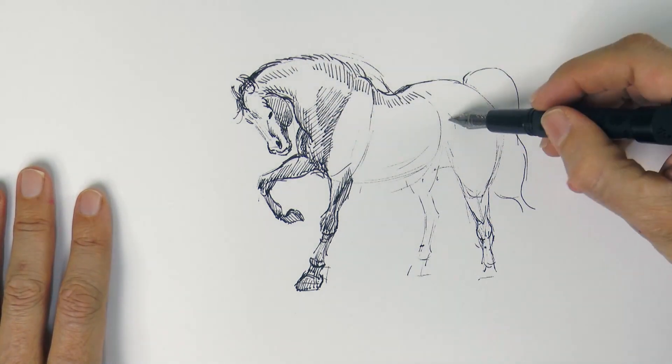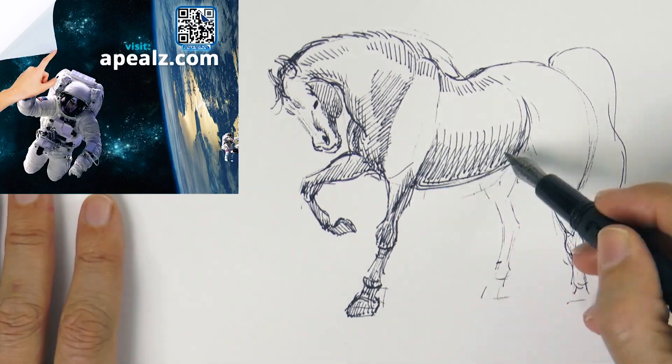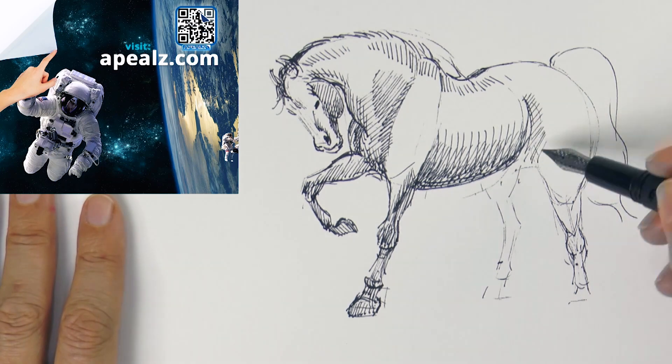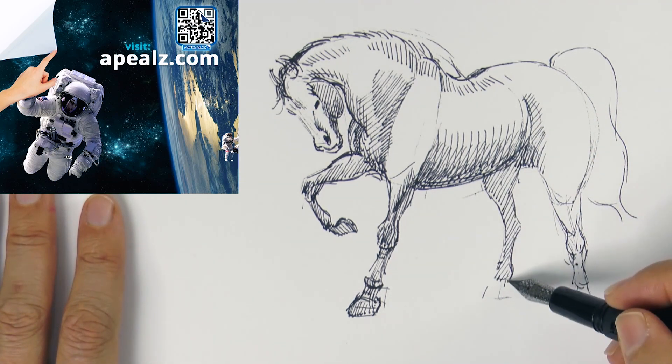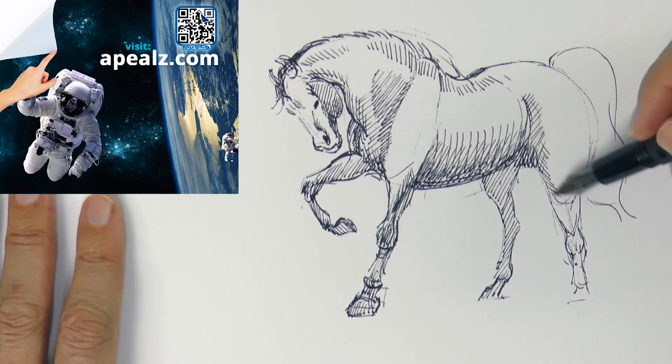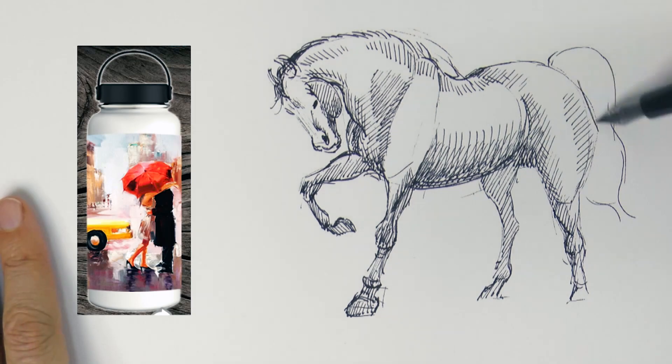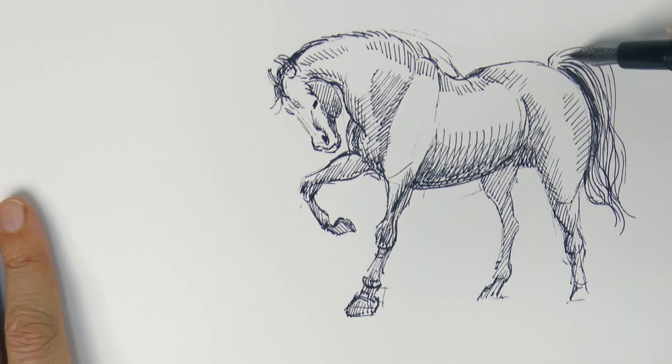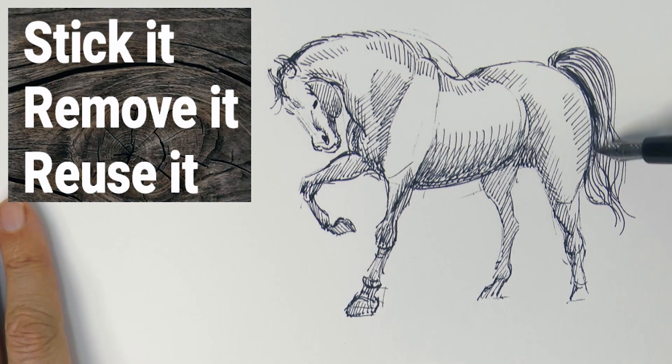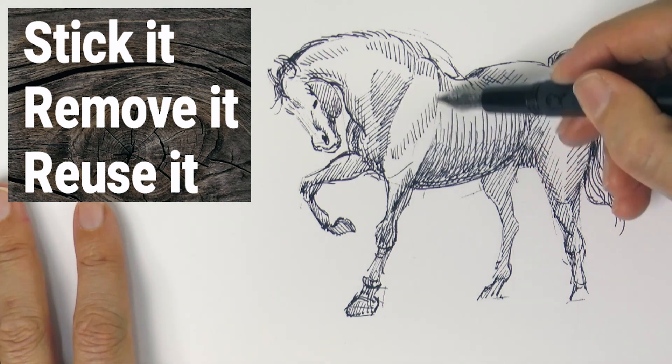And while I continue drawing, I want to briefly talk to you about Appeals, our sponsor. As you probably know, Appeals are a unique fabric decal, that is a sticker, that can be applied to your phone, water bottle and more. Appeals are made in the USA. Their special adhesive allows you to stick your appeals to virtually anything, remove it and reuse it somewhere else.